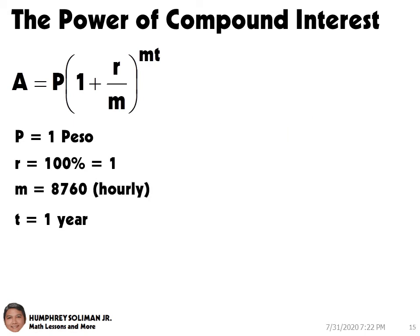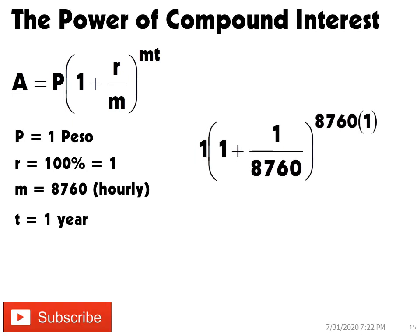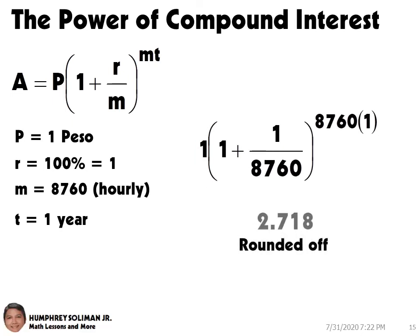If the bank offered compounding the interest hourly, the M will be equal to 8760, you will have 2.718.